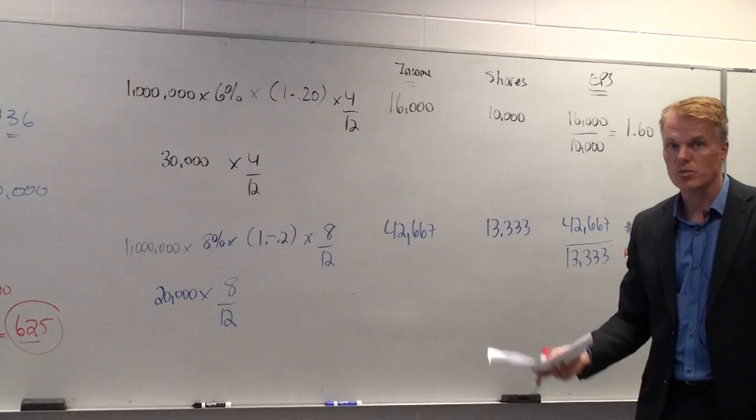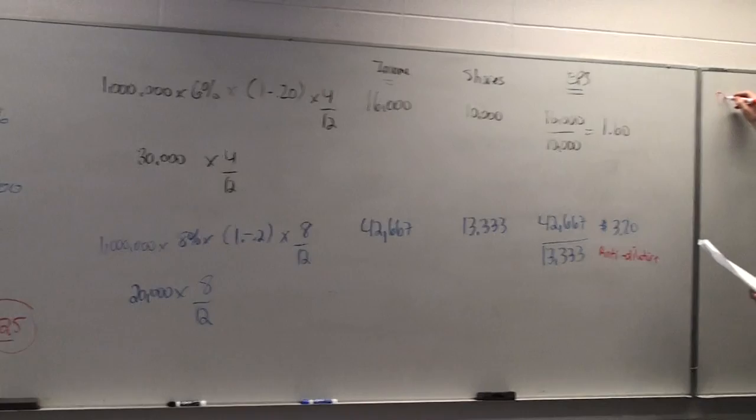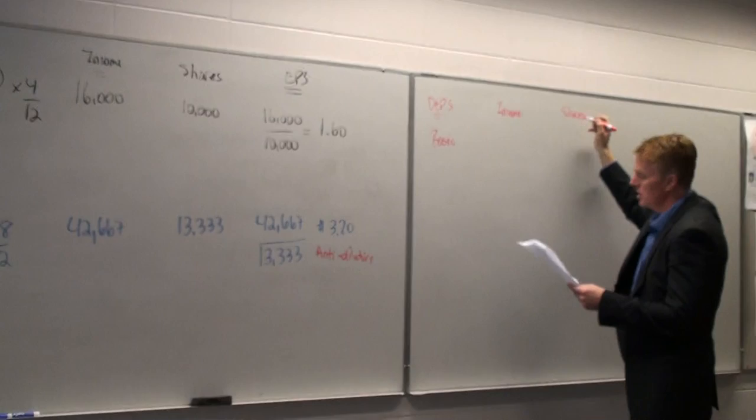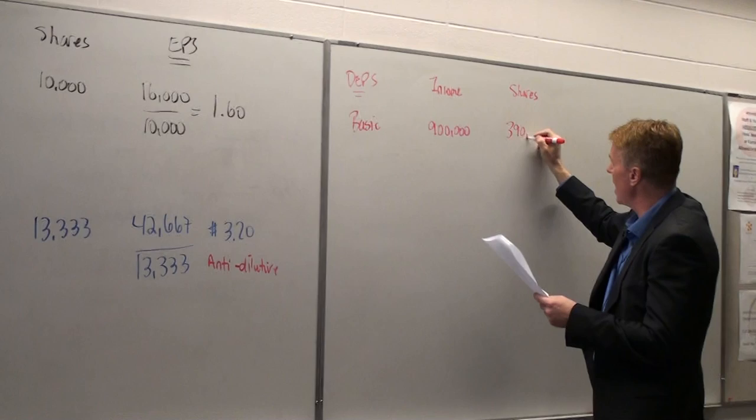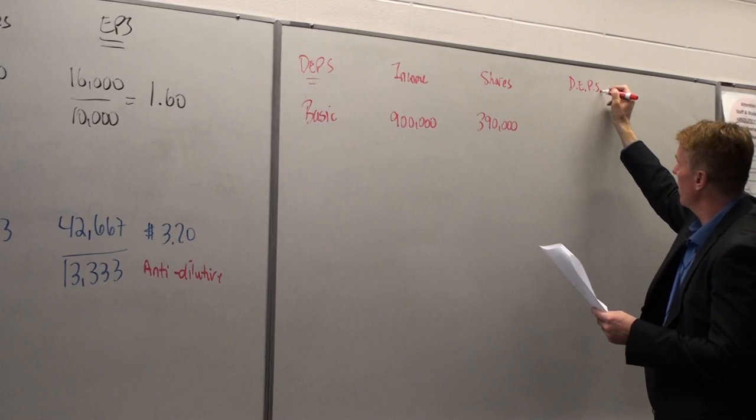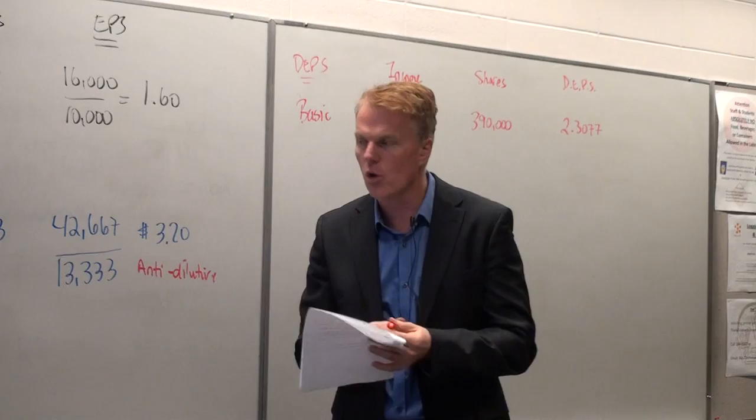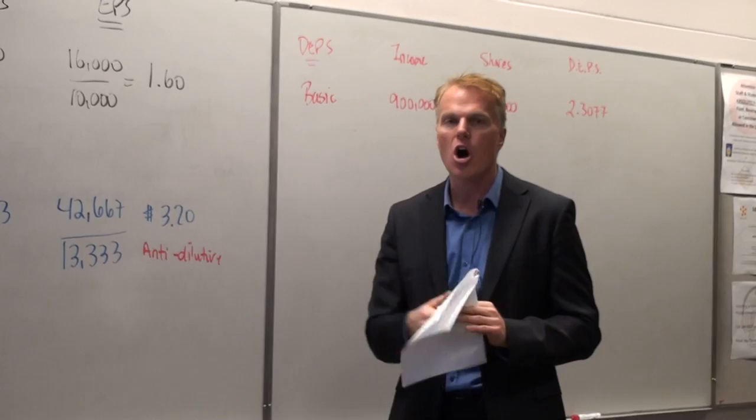We're not done yet. We still need to do the diluted EPS schedule. So we've got to calculate our diluted EPS. So start off with your basic information, and then put in your shares information. So our basic information was $900,000, 390,000, and our basic EPS starts at $2.3077. Now, go to four decimals. I always say four decimals. Always four decimals.